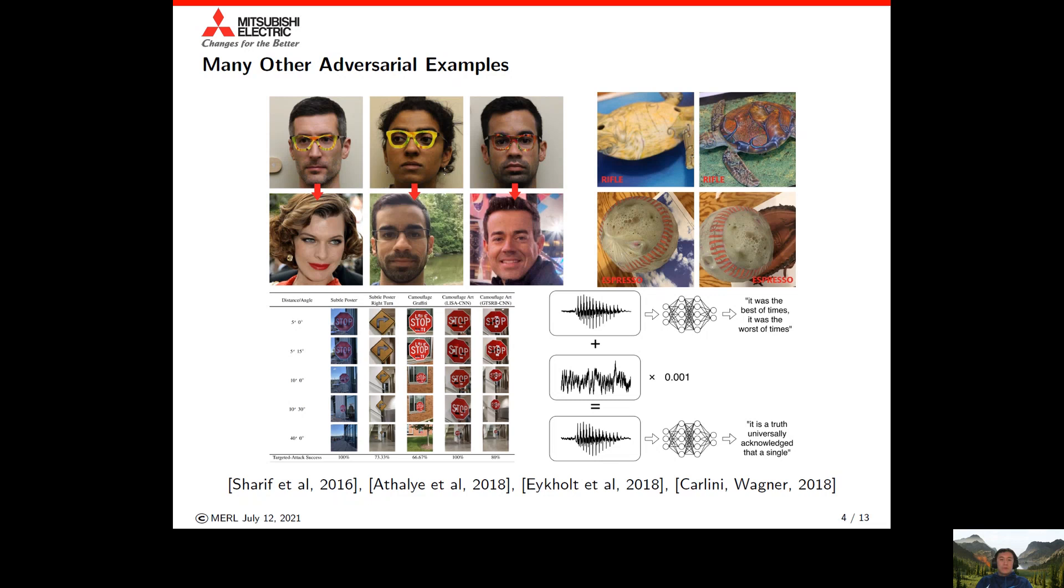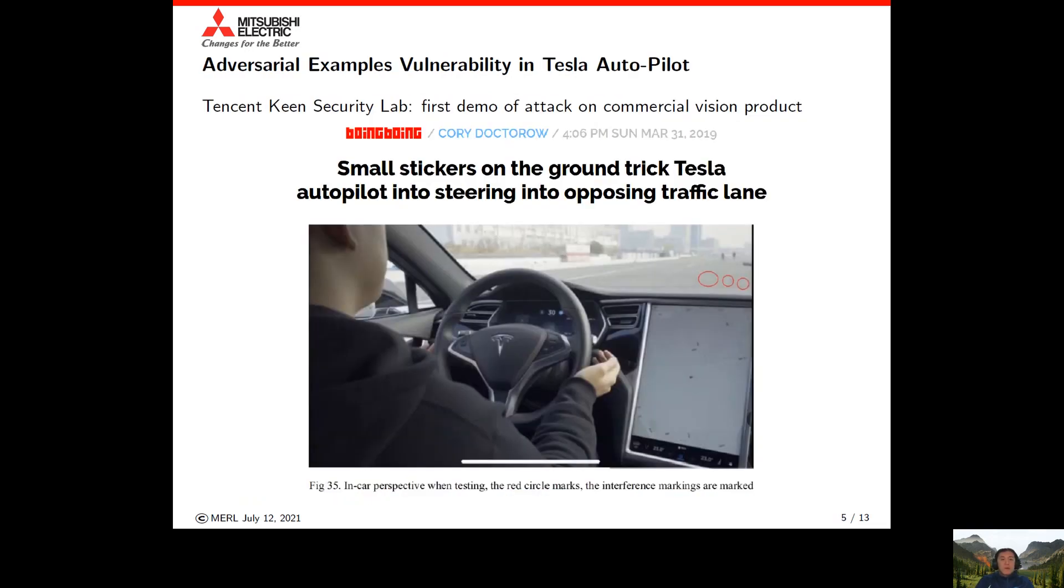Adversarial examples have been demonstrated in other modalities besides images. There are cases where tiny imperceptible changes have been made to audio sequences to cause speech detection networks to completely fail. Adversarial vulnerabilities have even been demonstrated in commercial products. For example, the Tesla autopilot system with small stickers added to the ground can fool the computer vision system into misdetecting lane markers.